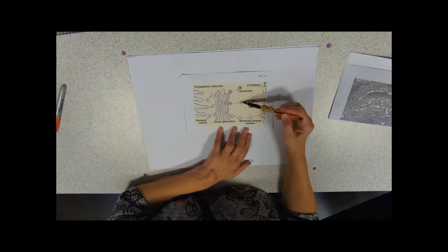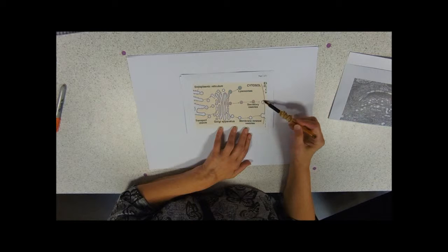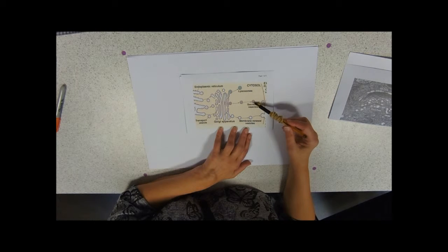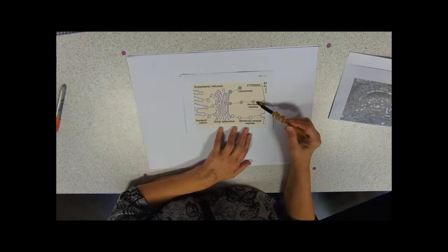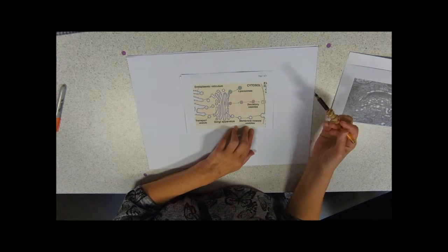Being packaged up into a vesicle, the vesicle then moving towards the plasma membrane here, again fusing with it, so the membrane actually fuses, nothing crosses the membrane, and releases the contents to the outside of the cell, where it would form its function.